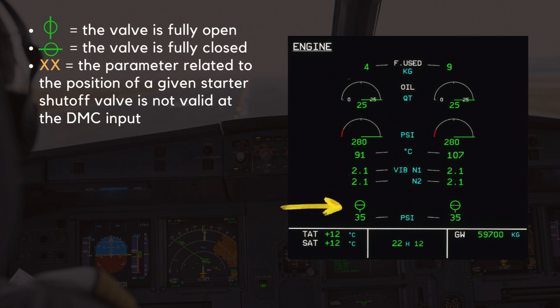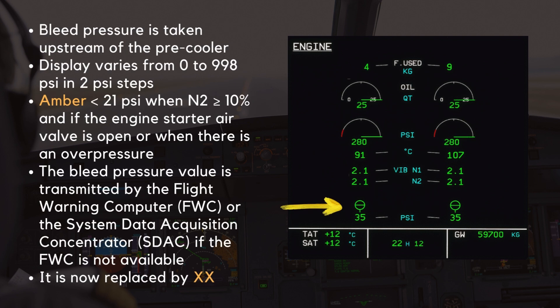The position indication of the starter shutoff valve is in-line green when the valve is fully open, and cross-line green when the valve is fully closed. It is replaced by two amber crosses when the parameter related to the position of a given starter shutoff valve is not valid at the DMC input. The bleed pressure below the start shutoff valve is taken upstream of the pre-cooler. The digital display varies from 0 to 998 PSI in 2 PSI steps. This becomes amber below 21 PSI with actual N2 greater than or equal to 10% and if the engine starter air valve is open, or when there is an overpressure. The bleed pressure value is transmitted by the Flight Warning Computer, FWC, or the System Data Acquisition Concentrator, SDAC, if the FWC is not available. Otherwise it is replaced by two amber crosses.